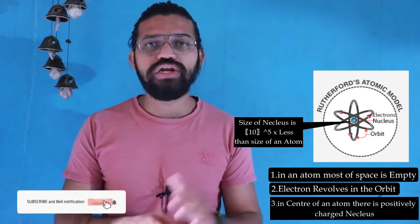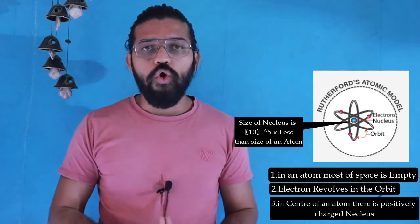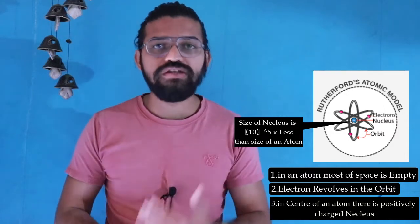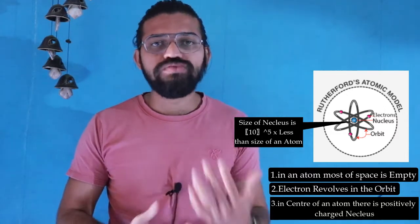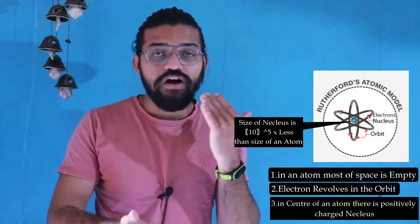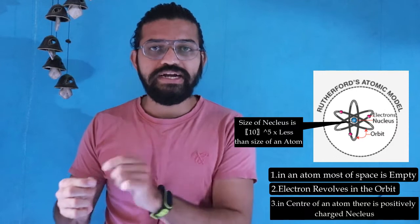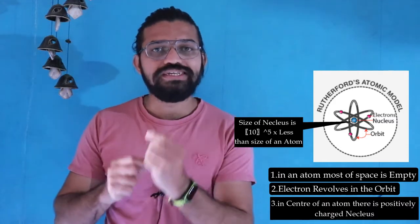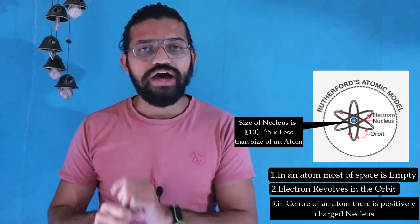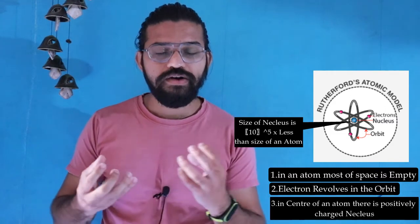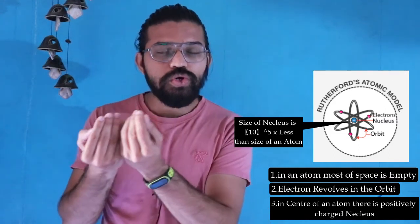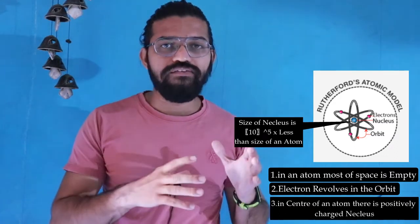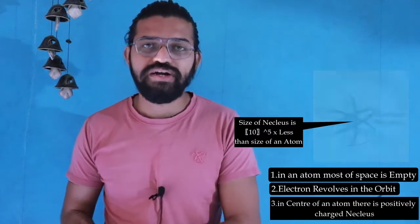This structure of the atom is now called the nuclear model of the atom. In today's video we learned about Rutherford's gold foil experiment of 1911, reviewed its observations, and discovered the nucleus lying at the center with higher mass and energy. The electrons orbit around the nucleus with empty space between them.